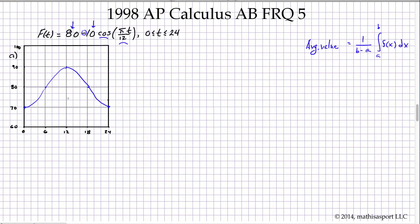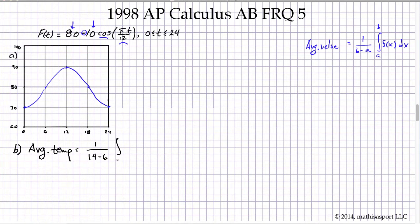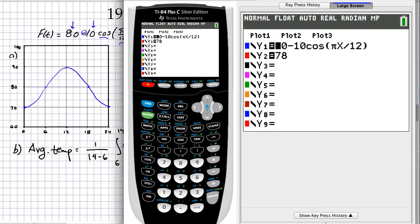Let's go on to part B. This is a request for the average temperature, so we're going to use the average value over an interval. The average temperature is going to equal the integral of 1 over the distance of the interval — 14 minus 6 — and then we're going to integrate from 6 to 14 the temperature. This we're going to have to approximate numerically, so I've already gone ahead and put that formula in: 80 minus 10 cos.